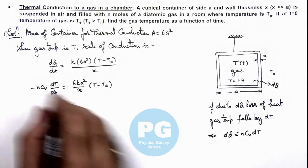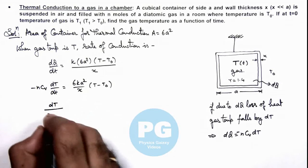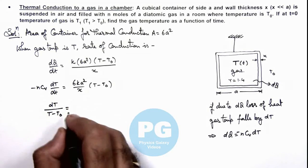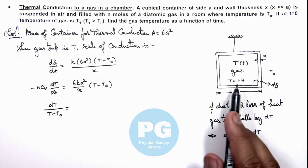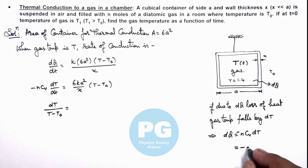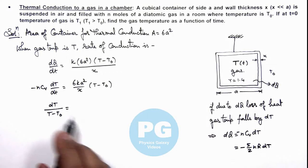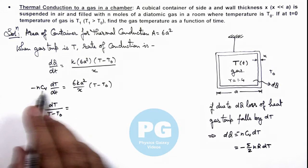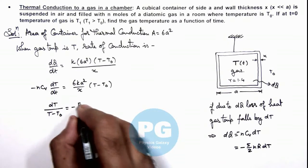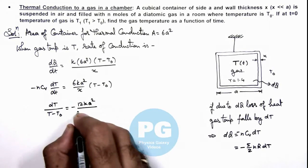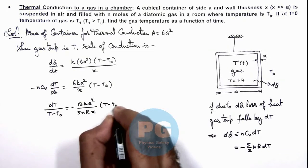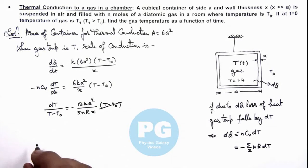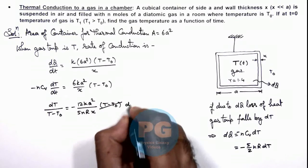Further we can rearrange these terms as dT/(T - T₀) is equal to - and the value of Cᵥ here we can write as, for a diatomic gas it is 5/2 R, so I can write it minus 5/2 nR dT. So here if we substitute it as 5/2 R, then this can be written as minus 12ka²/(5nRx) multiplied by (T - T₀), which I have taken on the other side. So this dT if I take over here, this dt will also be left over.